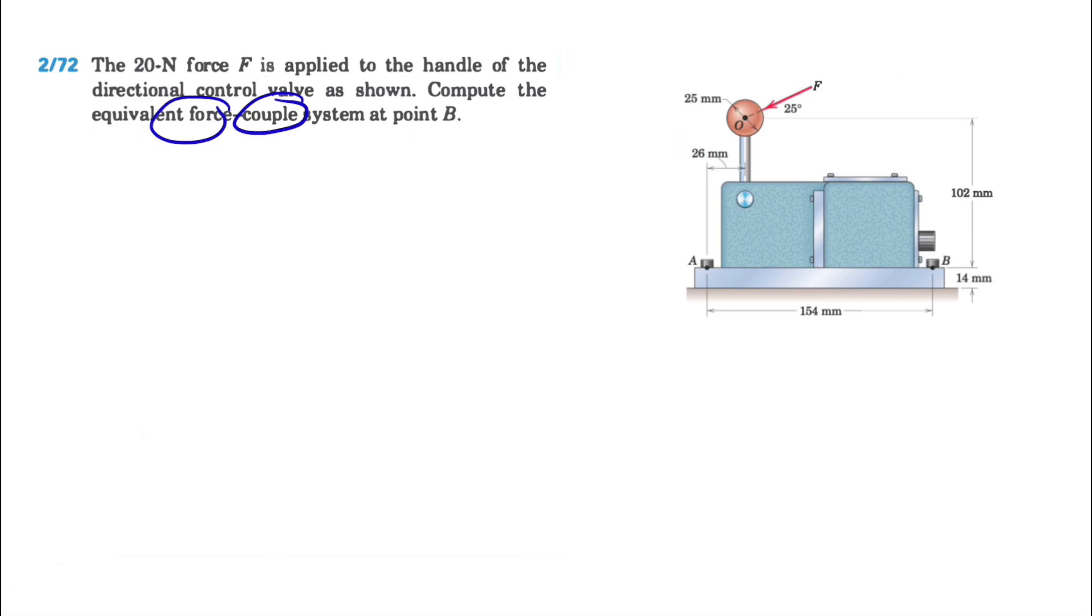So we are trying to find the force couple system, meaning we need a force and we need a couple. We have a force applying at point O. If we show our x and y in this direction, this will be the x component which will be f cosine of 25 degrees.